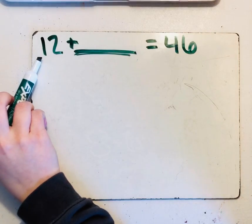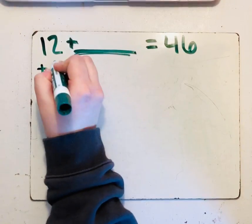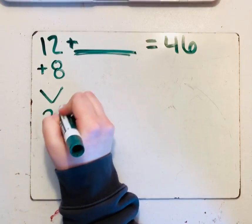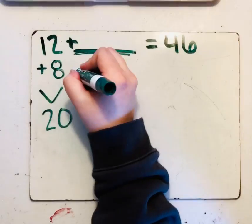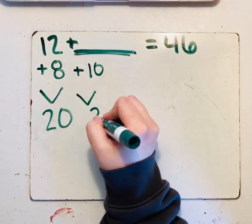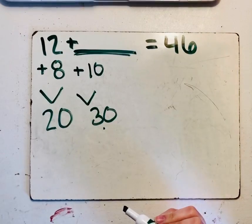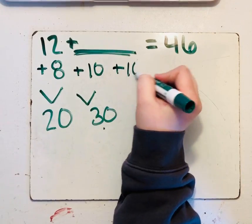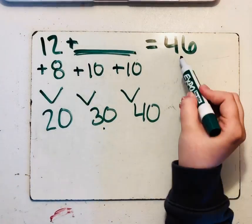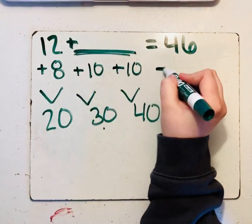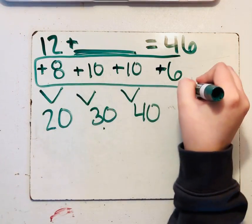So what can we add to 12 to get to a friendly number? Good. We are going to add 8. And that gets us to 20. What can we add to 20 to get us closer to 46? Good. We can add a 10. That gets us to 30. What can we add to 30 to get closer to 46? Good. We can add another 10, which gets us to 40. What can we add to 40 to get to 46? Good. We can add a 6. But we're not done yet. We have to add all of these together.